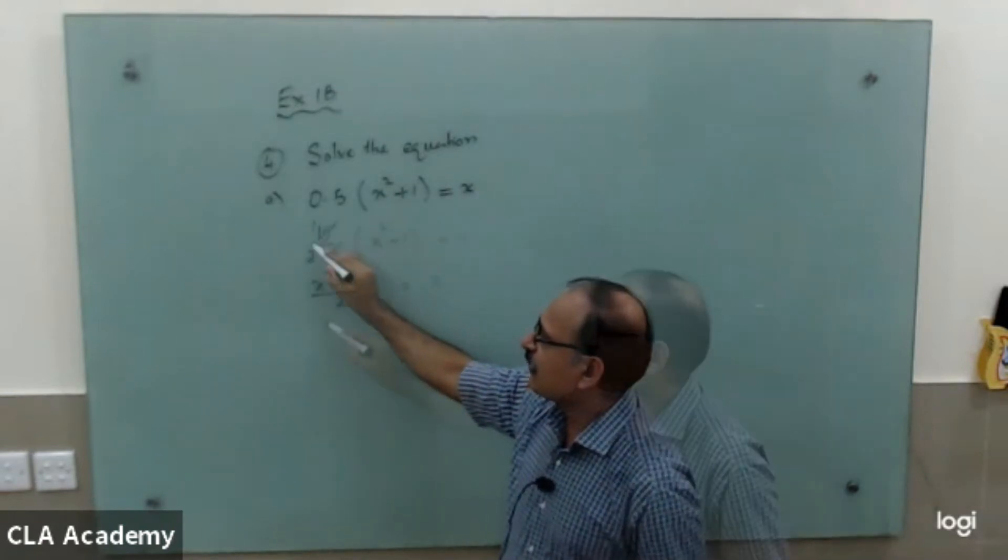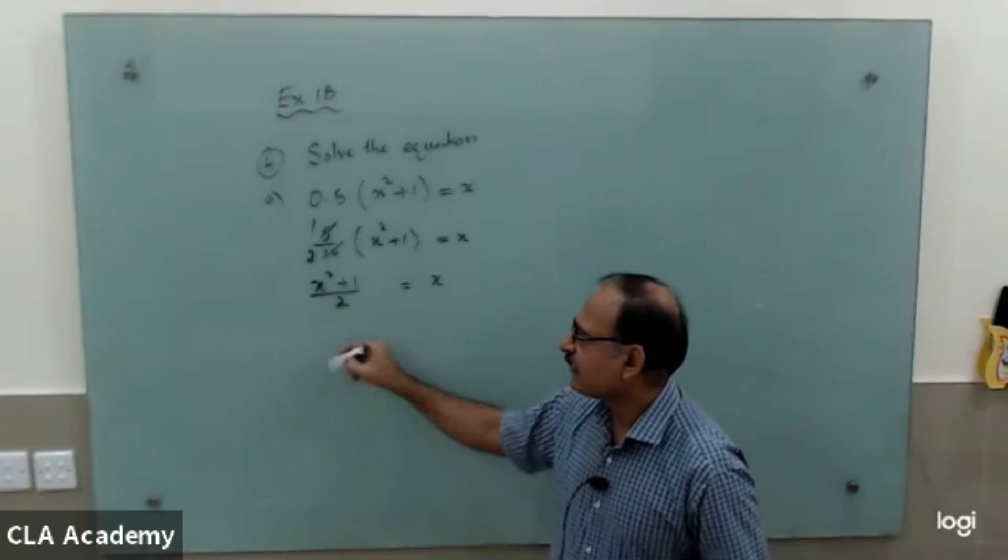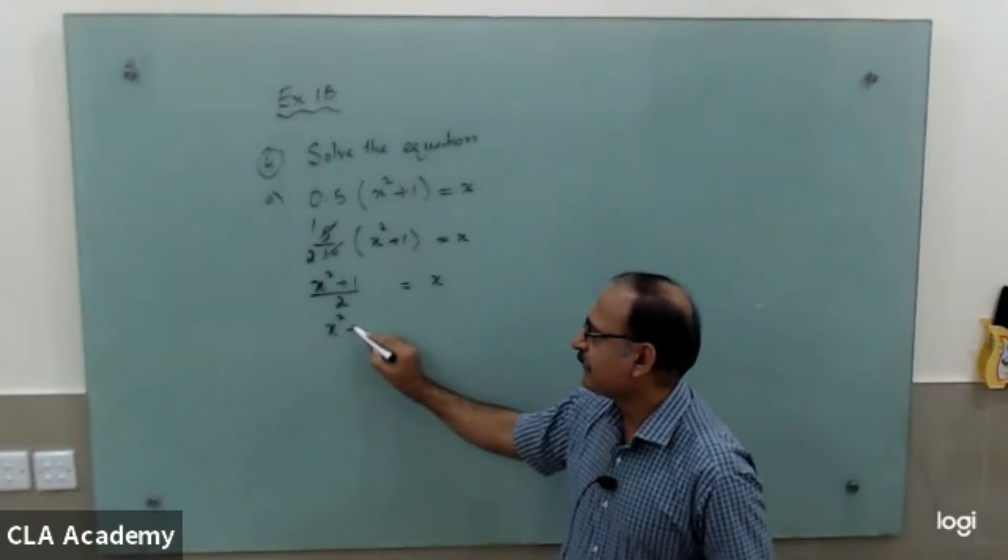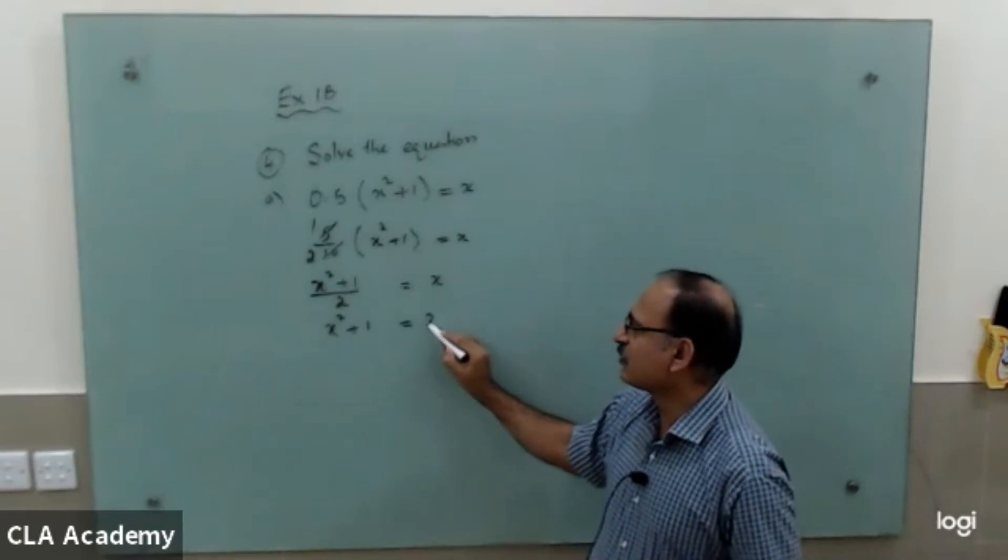As you know it will be like this: x squared plus one is equal to x.